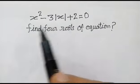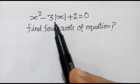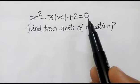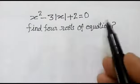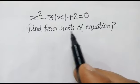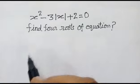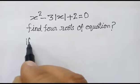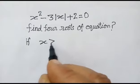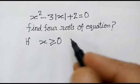We have been given the equation x squared minus 3 mod x plus 2 is equal to 0. We have to find out the four roots of the equation.